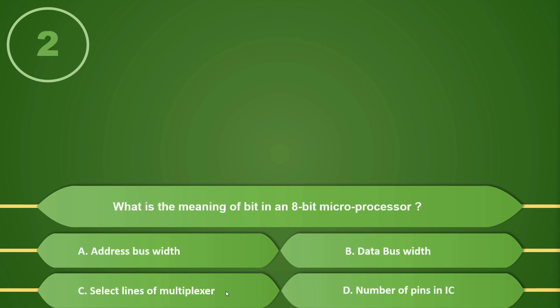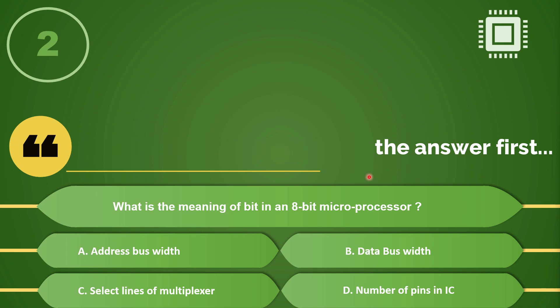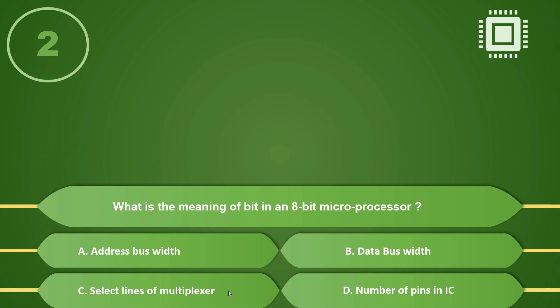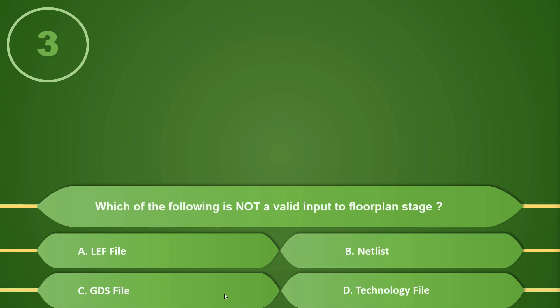The next question is: What is the meaning of 'bit' in an 8-bit processor? Is it A) an address bus width, B) data bus width, C) select lines of a multiplexer, or D) number of pins in the IC? It is a very fundamental question, and if your answer is B, data bus width, then you are correct.